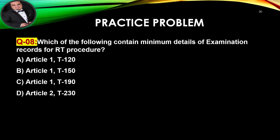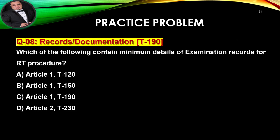Question number eight: Which of the following contains minimum details of examination records for a radiographic testing procedure? A. Article 1, T-120. B. Article 1, T-150. C. Article 1, T-190. D. Article 2, T-230. The best answer for question number eight is per item T-190 — it is C, Article 1, T-190.